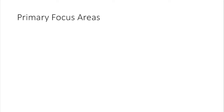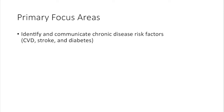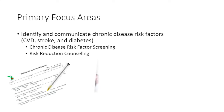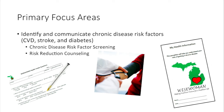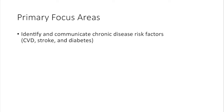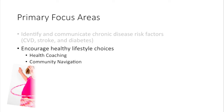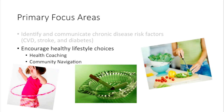The program has three primary focus areas. The first is to identify a woman's risk factors and let her know what they are. We identify risk factors through screening and then talk to her about them using risk reduction counseling — and that's one of the things that makes Wise Woman unique. We have the My Health Information pamphlet that lists all of her risk factors. The second focus area is to encourage healthy lifestyles through health coaching and community navigation. If a woman is ready to make changes, we provide health coaching, navigate her to community resources, and refer her to lifestyle programs.